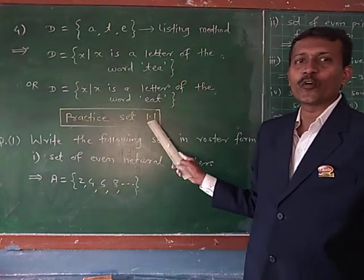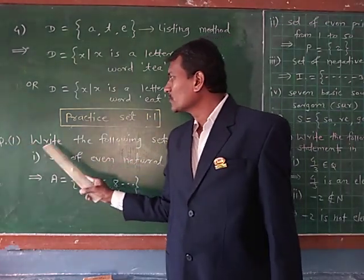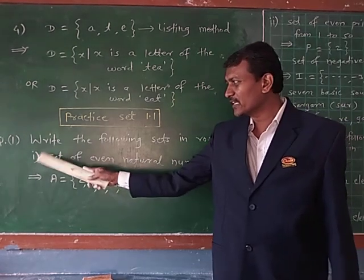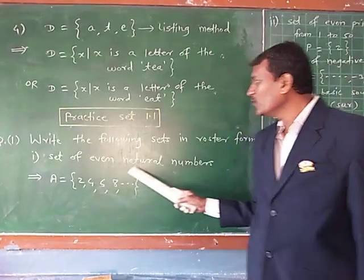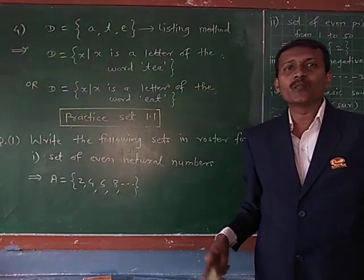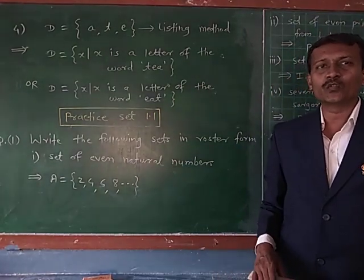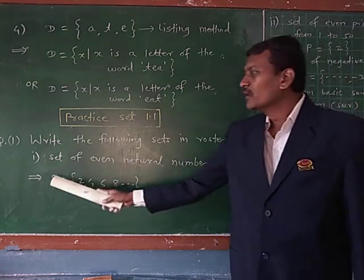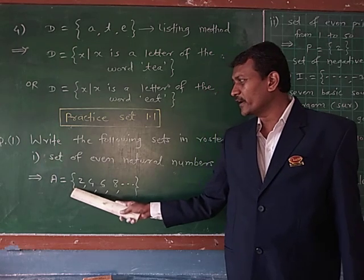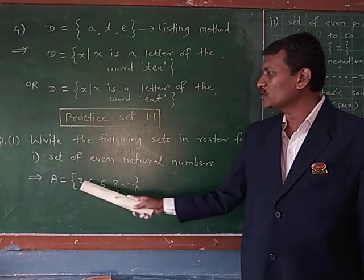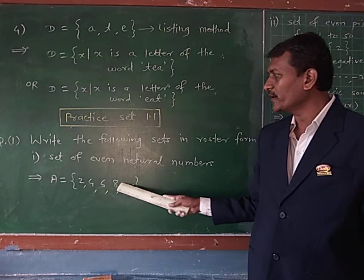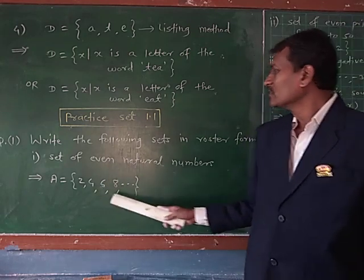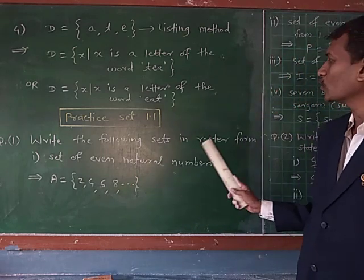Practice set 1.1, question number 1: Write the following sets in roster form. First example — set of even natural numbers. Natural numbers start from 1, 2, 3, 4, 5... but we have to write only even natural numbers. A = {2, 4, 6, 8, ...}. These numbers are the even natural numbers. This is the listing method or roster method.